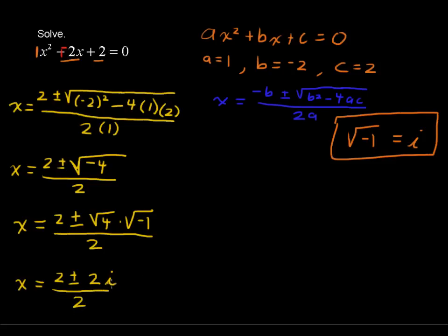Typically when you have an i, an imaginary component, you're going to write these as fractions. And in this case, the 2's are going to cancel out. So x equals 2 over 2 plus or minus 2 over 2 i. We can cancel these out, and we have x equals 1 plus or minus i.